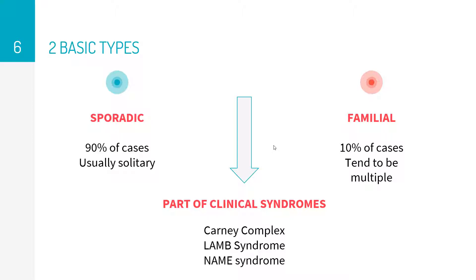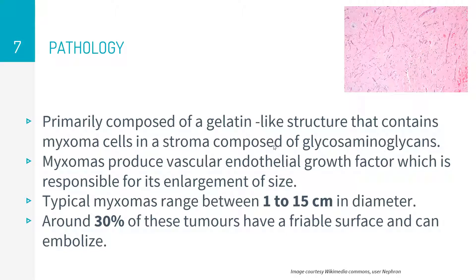Left atrial myxoma can also be part of other conditions such as Carney complex, LAMB syndrome, and NAME syndrome. These have been included on the website — you can have a look at the link in the description. Regarding pathology, it is essentially a gelatin-like structure containing myxoma cells within a stroma containing glycosaminoglycans.